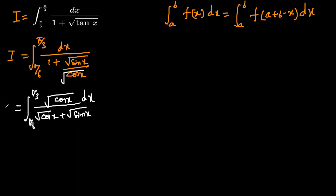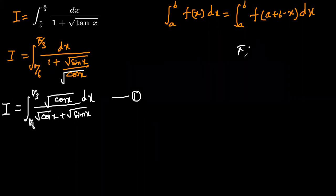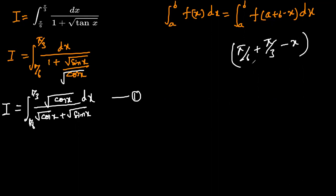Now this is equal to I, and let's call this equation 1. We want to use the formula here. You can see a + b − x, where a is π/6 and b is π/3. So a + b = π/6 + π/3. Taking LCM, that gives 3π/6 minus x, which is the same as π/2 − x.